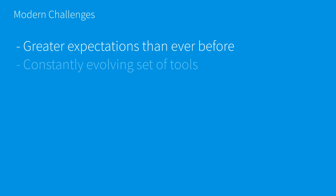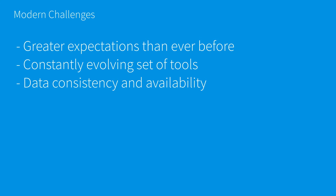Not only are expectations placed upon us greater than ever before, but we also have to contend with a constantly evolving set of tools. For instance, Amazon Web Services has over 10 releases per week in an average week. We have problems with data consistency and availability, as many companies move to more geographically disparate regions, such that we have to synchronize not only across geography but also across time. Whenever we release new releases, we need to make sure that we do not drop any data.